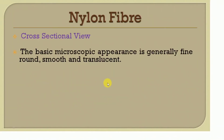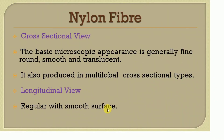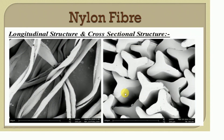Nylon fiber in cross-sectional view has a generally fine, round, smooth, and transparent appearance, and can also be produced in a multi-lobal cross-section type — meaning a lobal shape in cross-section. In longitudinal view, it looks regular with a smooth surface. The image clearly shows the multi-lobal shape in cross-section, making nylon easy to identify, while the longitudinal view shows a regular and smooth surface.